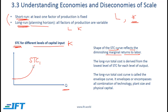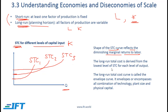Now what if we had a larger plant? Plant 2, which is bigger, will obviously have a higher fixed cost. If we go even larger, we get another short-run total cost curve with a still larger plant. Notice that the long-run total cost is derived from the lowest level of short-run total cost for each level of output. So if we consider the long run where plant size is also variable, we derive the long-run total cost curve using the lowest portions of the short-run total cost curves. Therefore, the long-run total cost curve is also called the envelope curve.